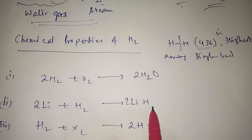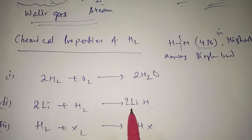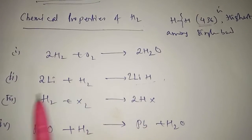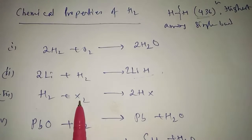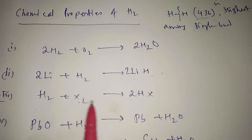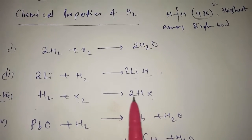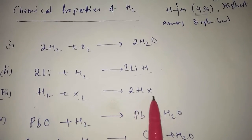Hydrogen reacts with X2, X stands for halogens - fluorine, chlorine, bromine, iodine. They will form 2HX, means 2HCl, 2HBr, 2HI like that. Lead oxide reacts with hydrogen gives you lead plus water.